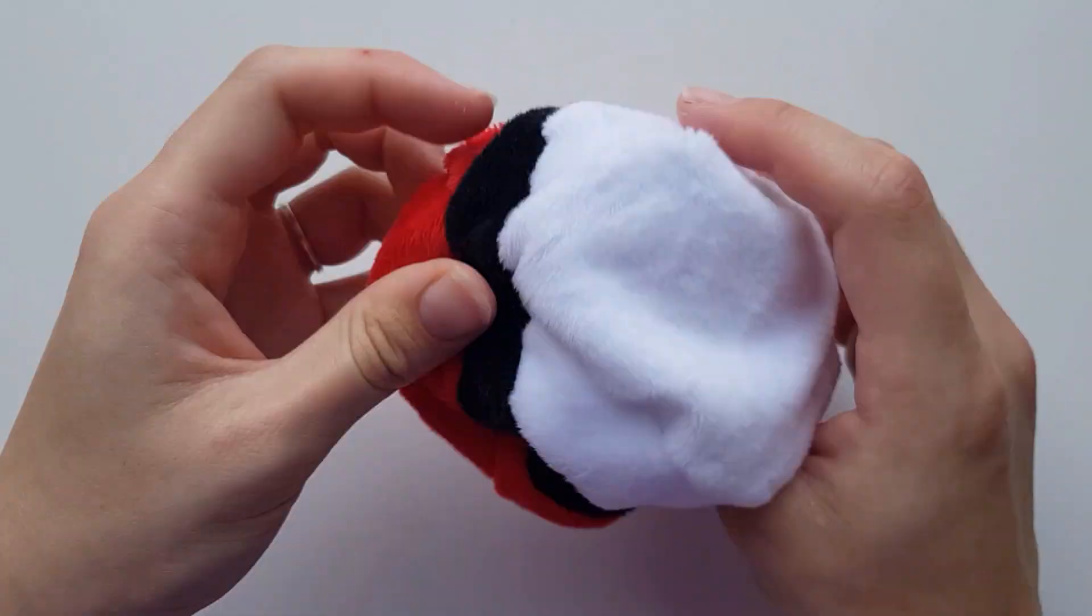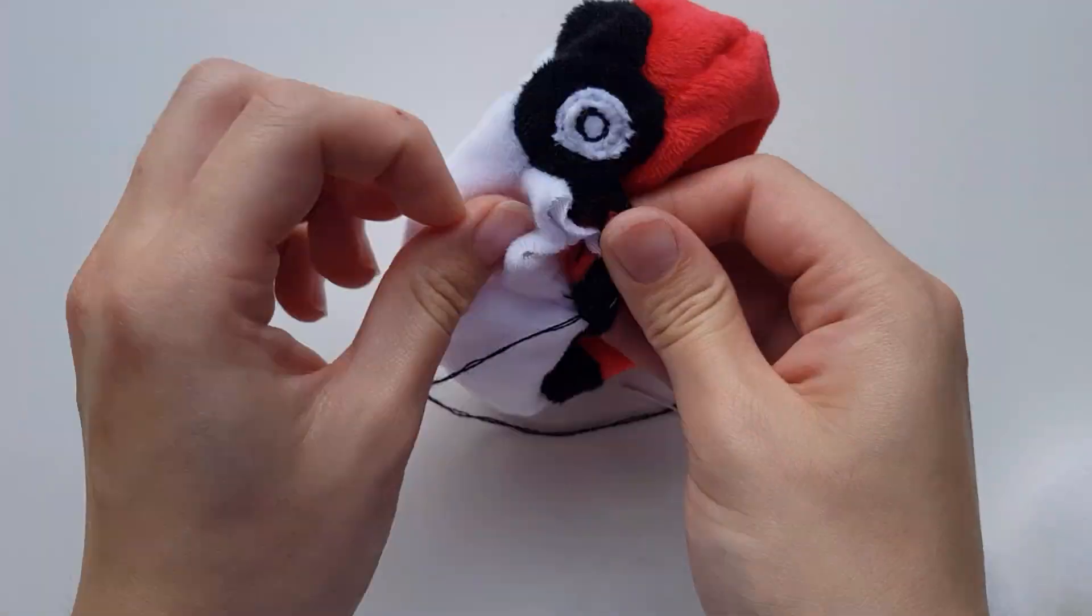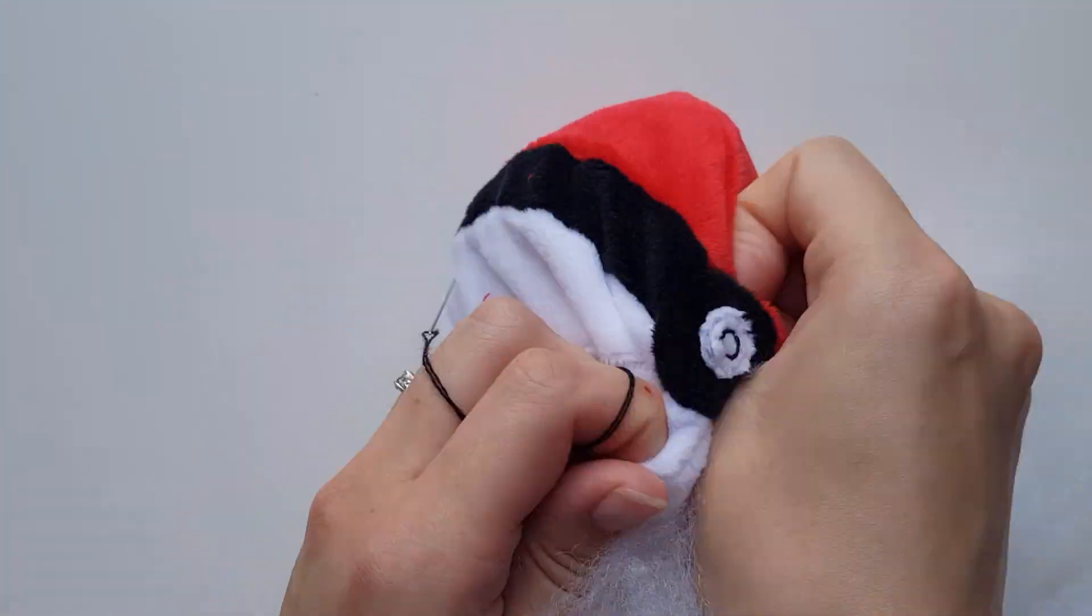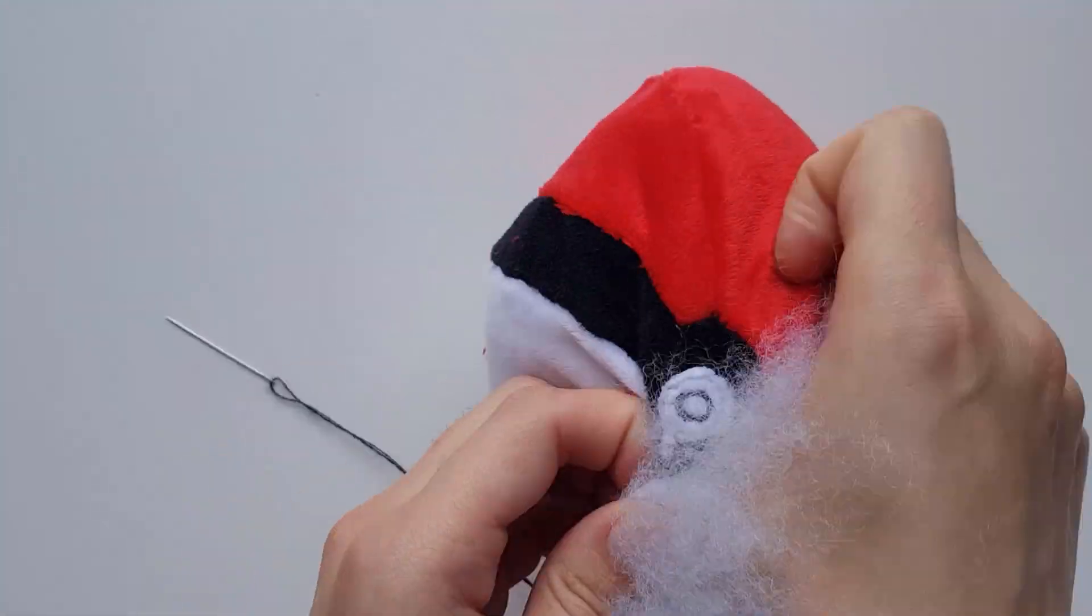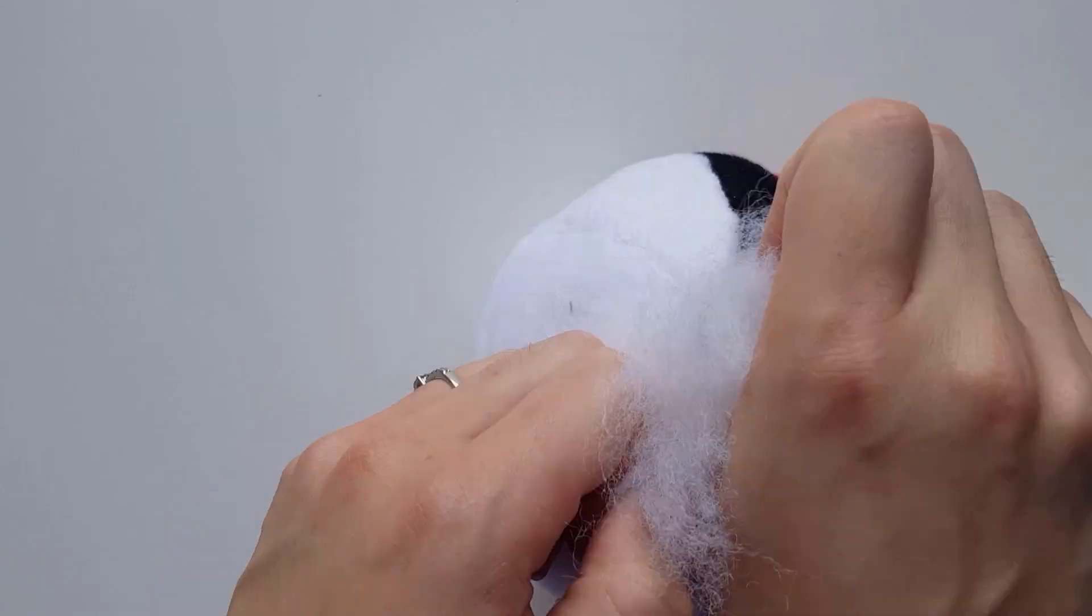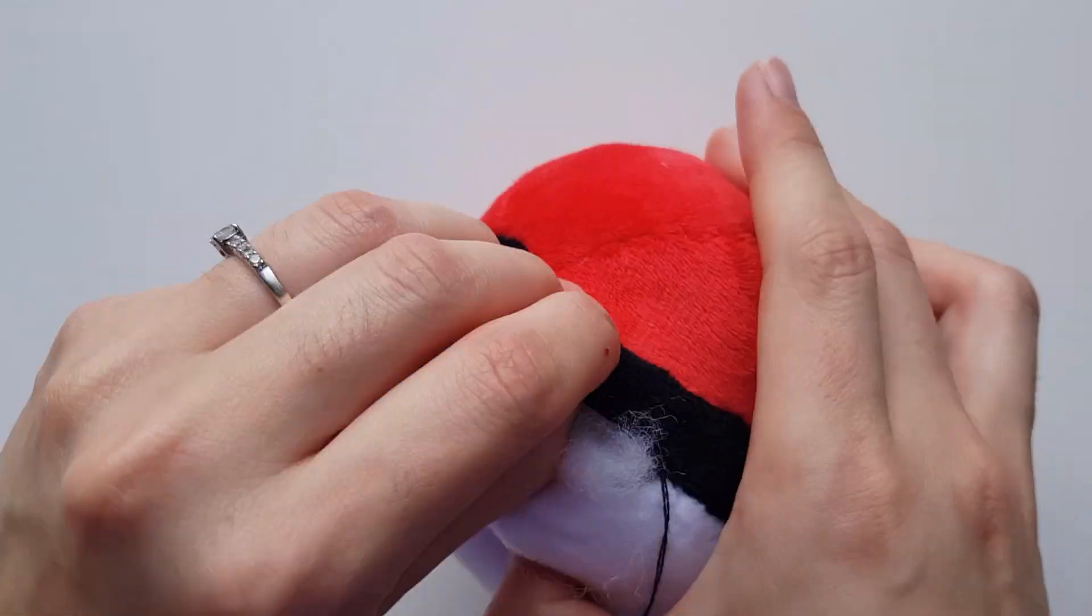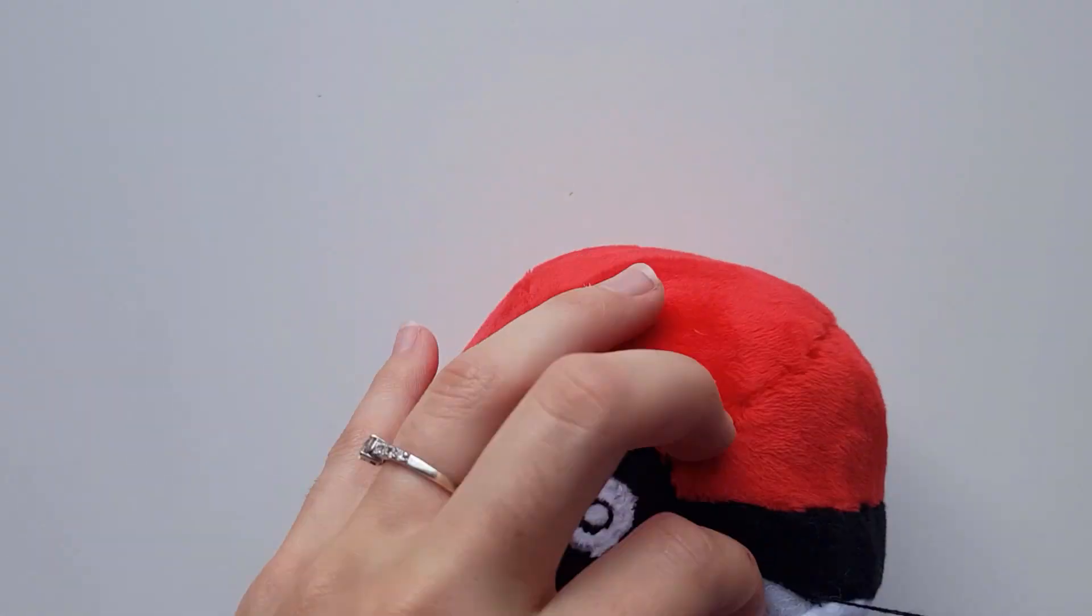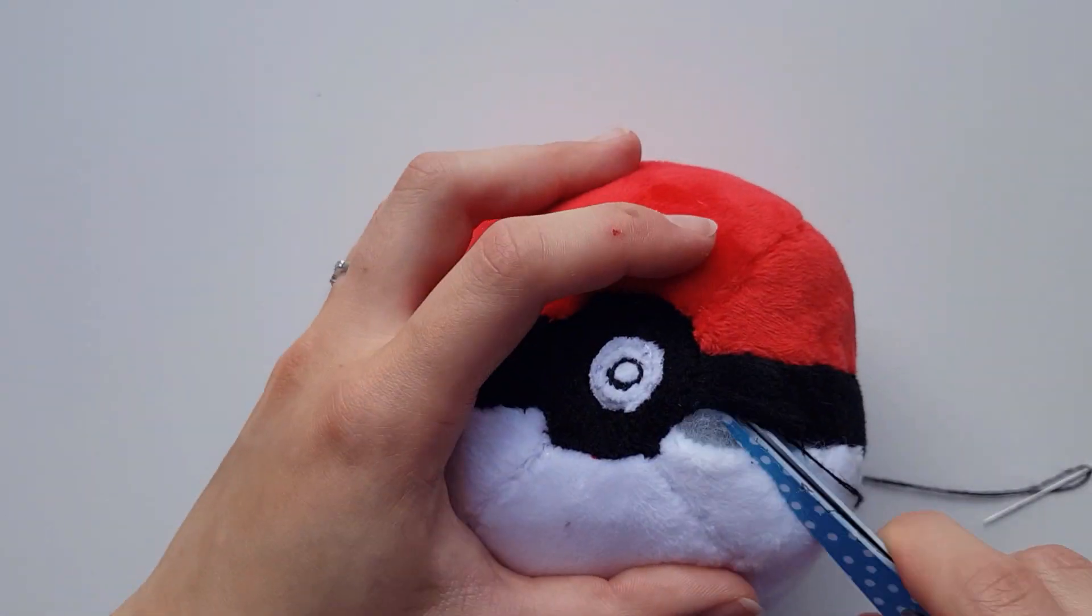Leave enough gap to flip, then turn the plush upright and stuff it. Use an invisible stitch to close off the remaining gap.